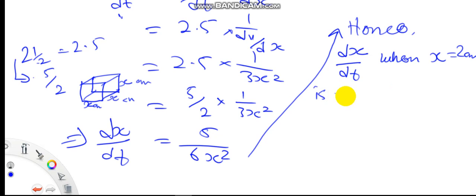dx/dt is equal to 5 over 6x squared. What is x? x is 2 centimeters squared. So this is now equal to 5 over 6 times 2 squared.